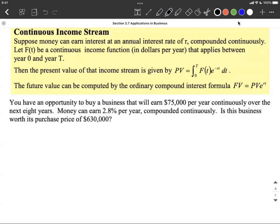We have the opportunity to buy a business that will earn $75,000 per year continuously over the next eight years. So what they've given us is an income function. F of T is going to be a constant $75,000 per year over the next eight years. So big T is going to be eight in our case.